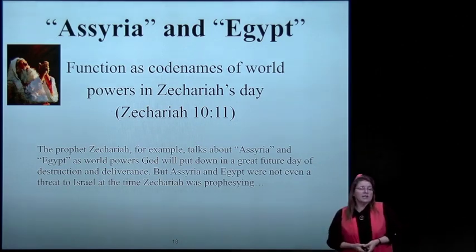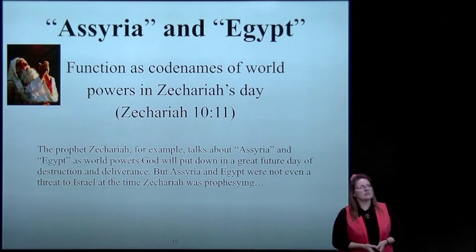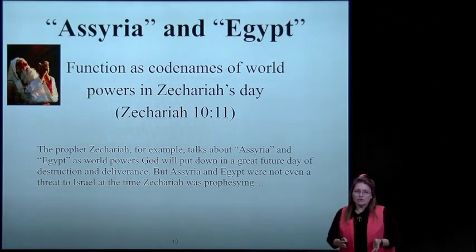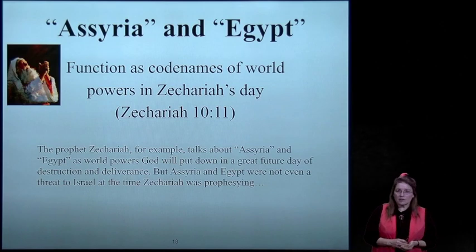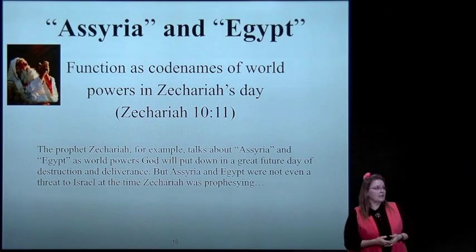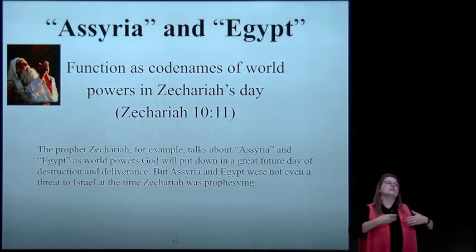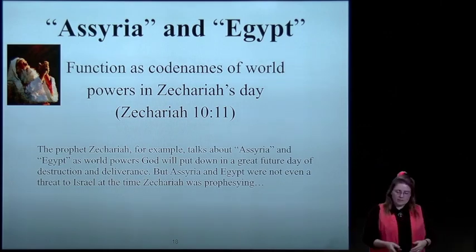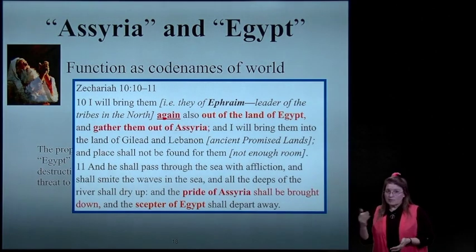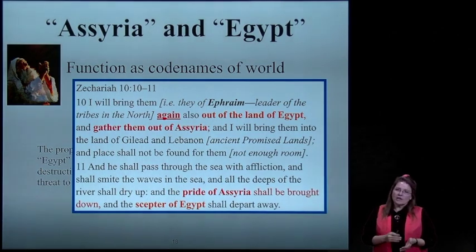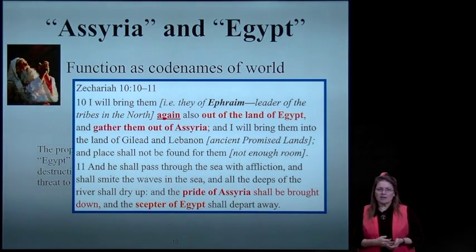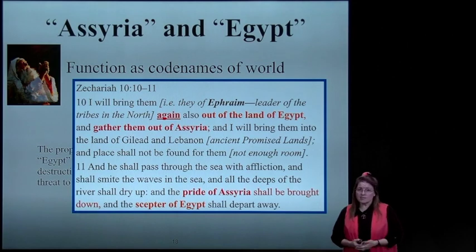He didn't give us all the information, even that we could glean right out of the Bible. Assyria and Egypt function as code names of world powers in Zechariah's day as well—but the interesting thing is that in Zechariah's day, Assyria and Egypt were no longer a threat to Israel. He is building off of the prophecies of Isaiah. In Zechariah: 'I will bring them—meaning Ephraim and the leader of the tribes of the north—again out of the land of Egypt and gather them out of Assyria, and I will bring them into the land of Gilead and Lebanon.'